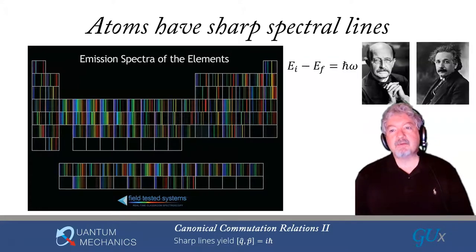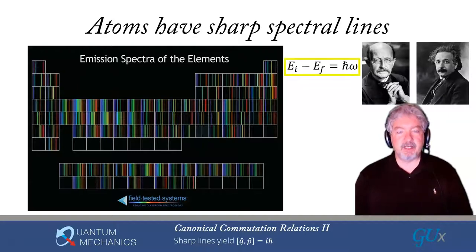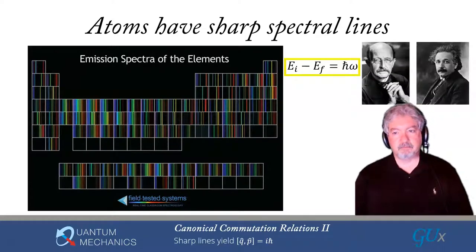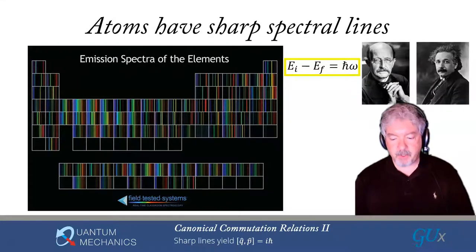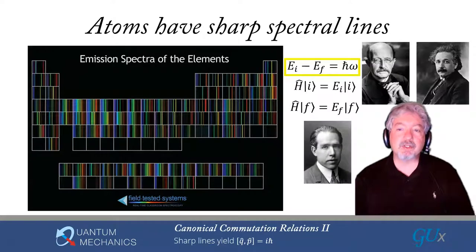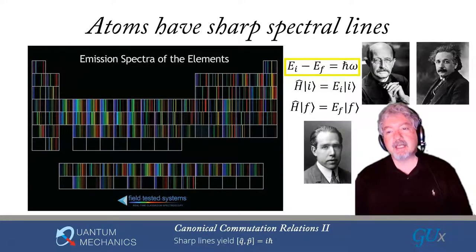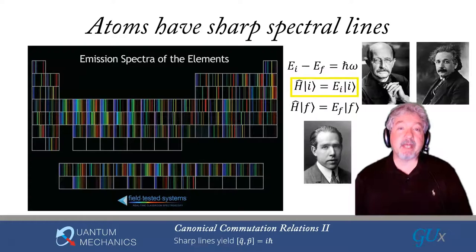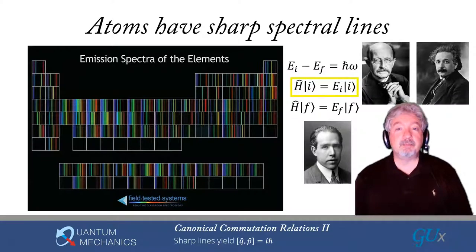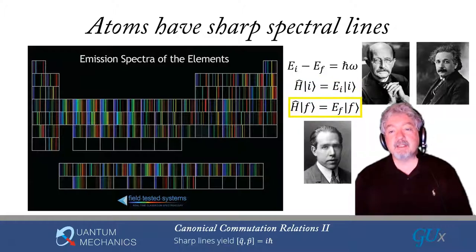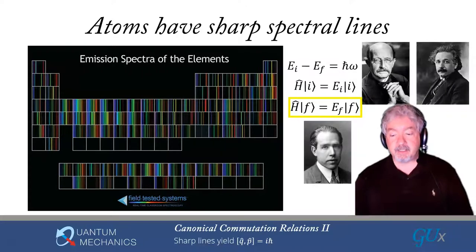The Planck-Einstein relation allows us to relate the energy difference between the initial and final energy of the atom to the energy of the photon that was emitted. That energy difference, EI minus EF, is equal to h-bar omega. Bohr told us we have two steady states — eigenstates where the Hamiltonian acting on the initial state gives an energy EI times that state, and acting on the final state gives energy EF times that state.